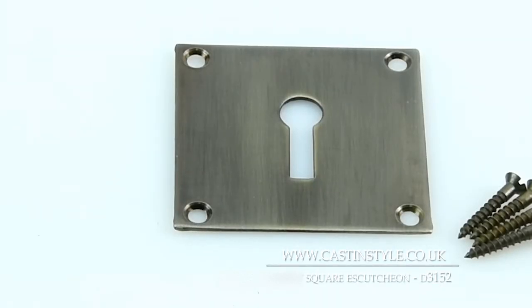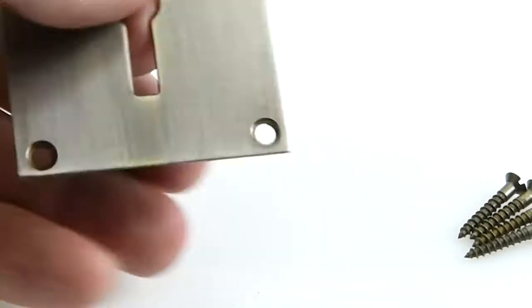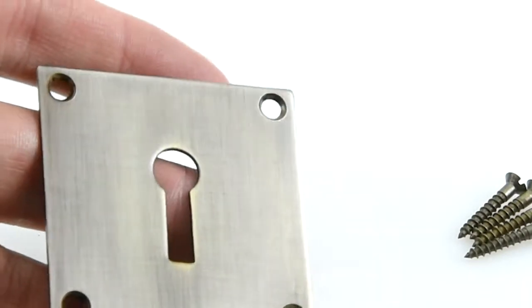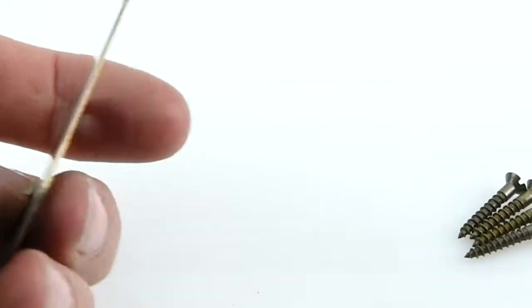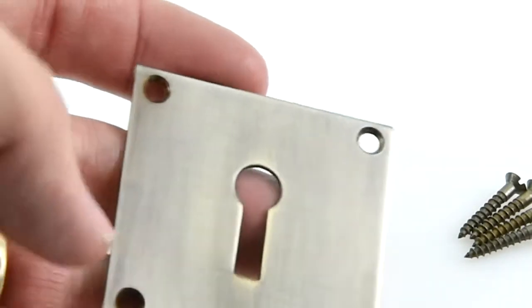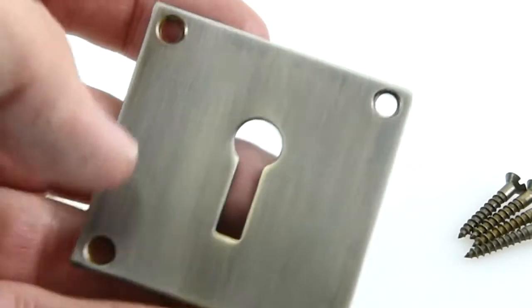This is the D3152 Croft square escutcheon keyhole cover. Croft makes really good high quality architectural hardware pieces. This one's made from solid brass or brass plate in this case, and then it's been given a finish.